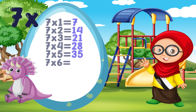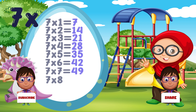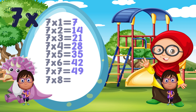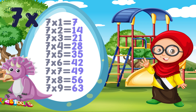7 times 6 is equal to 42. 7 times 7 is equal to 49. 7 times 8 is equal to 56. 7 times 9 is equal to 63. 7 times 10 is equal to 70.